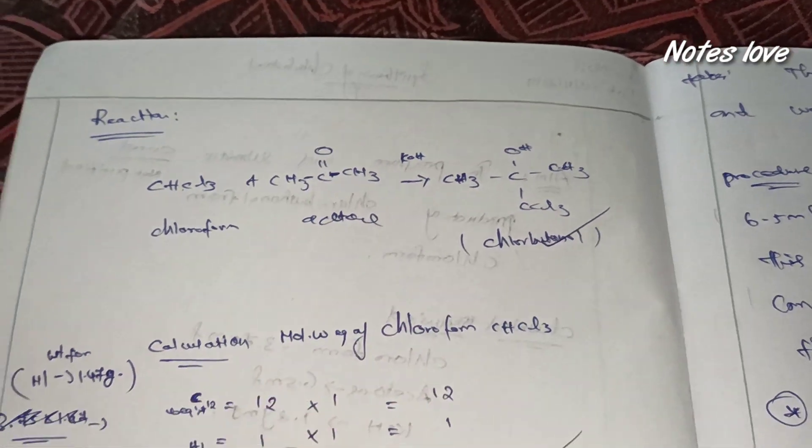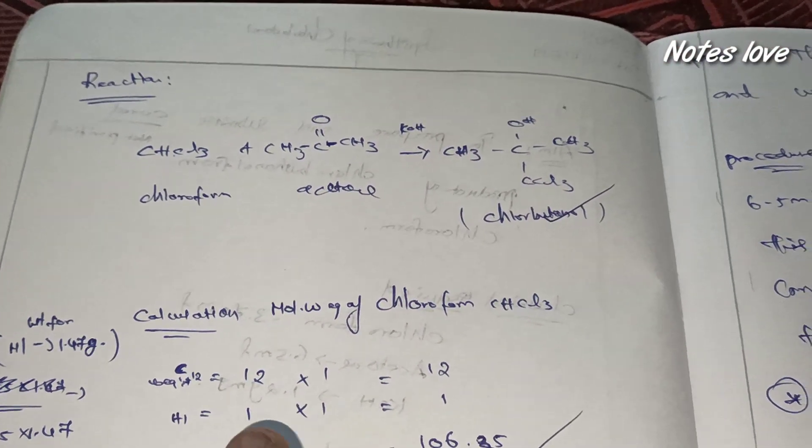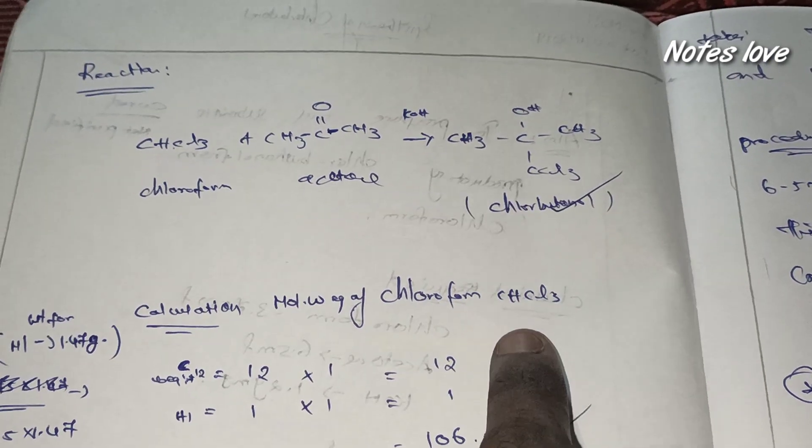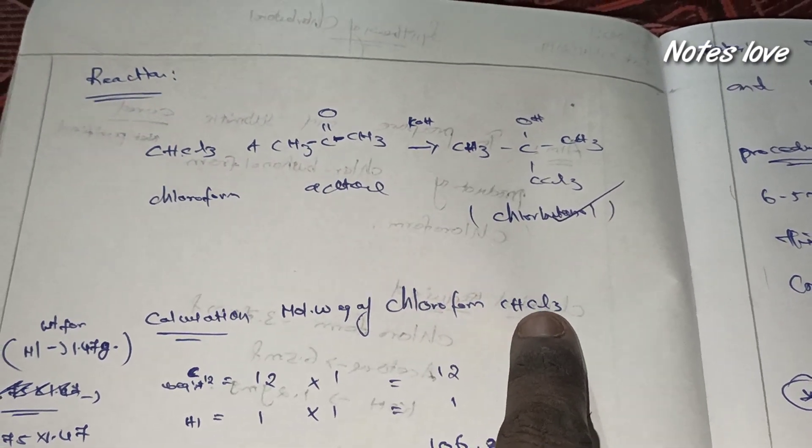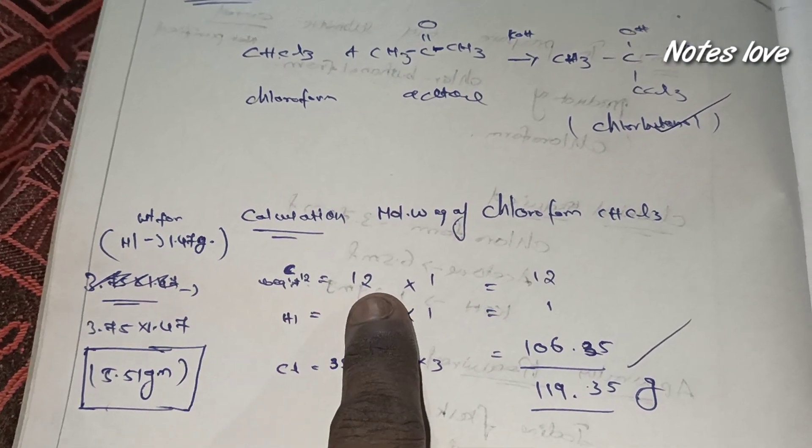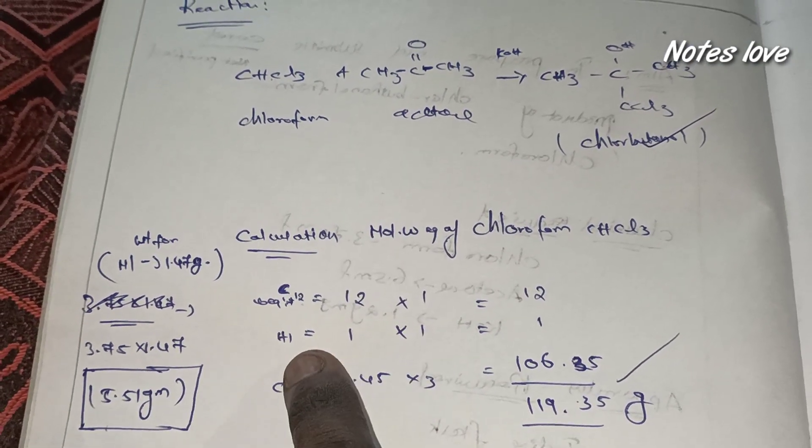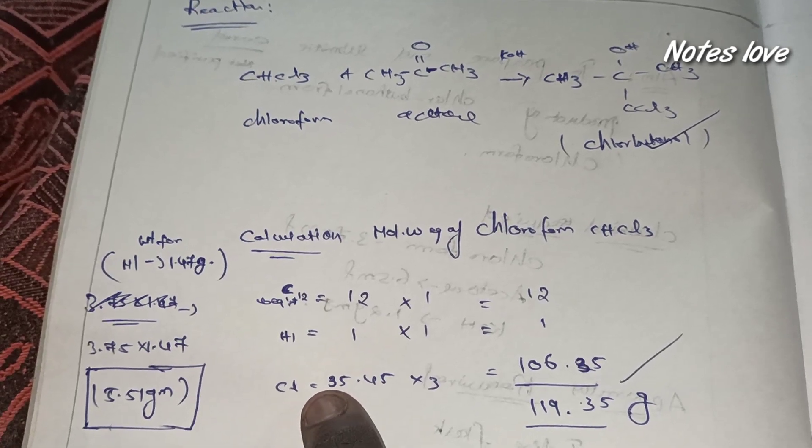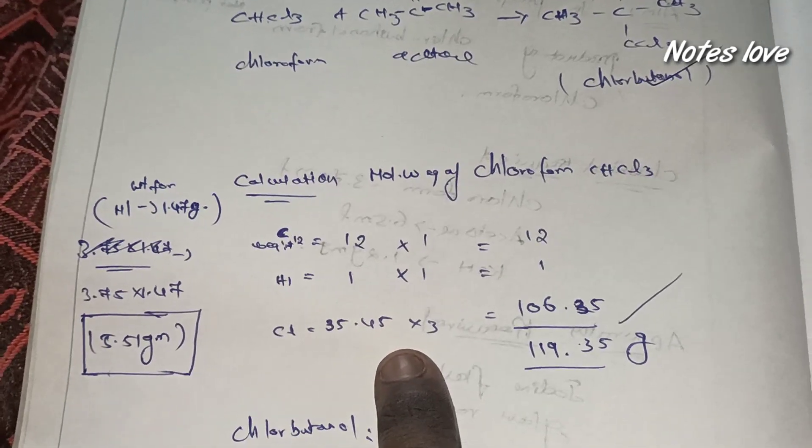And how we can calculate molecular weight of chloroform? We just take the molecular weight CHCl3. C is molecular weight 12, hydrogen 1, and chlorine 35.4, just add it.